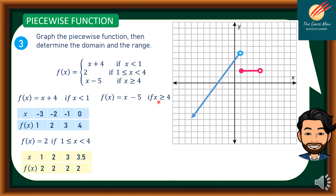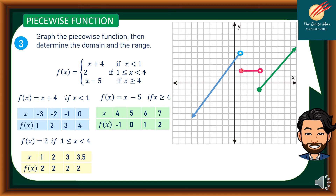For f(x) = x - 5 if x ≥ 4: x = 4 gives -1; x = 5 gives 0; x = 6 gives 1; x = 7 gives 2. The graph moves upward into the first quadrant. The domain covers all x values from negative infinity to positive infinity, and the range is also negative infinity to positive infinity.